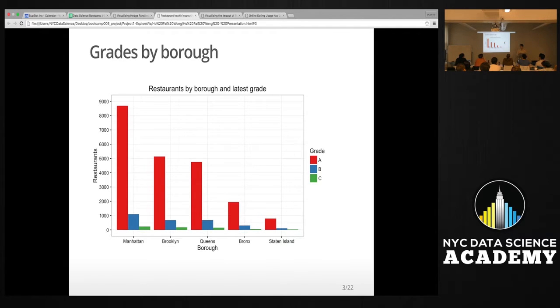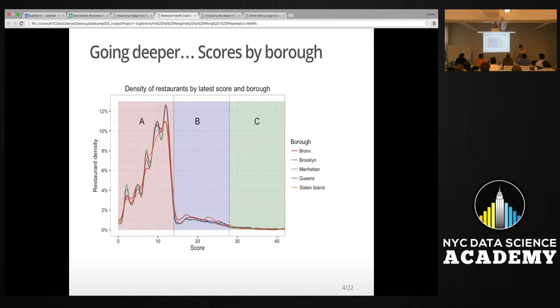So right now, based on the grades themselves, it's kind of hard to differentiate the different boroughs' cleanliness. So I figured, you know what, Inception number 8 or 9—let's go deeper. So I figured let's look at the scores. Here you see the distribution of restaurants by score, the densities, and I also overlaid which grades they corresponded to: A, B, and C. So from the get-go you can see that for the most part they all fall within A, which we saw earlier.